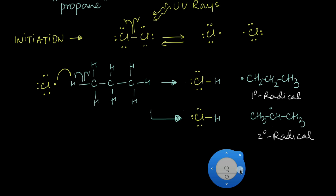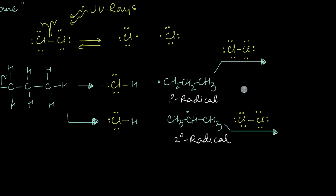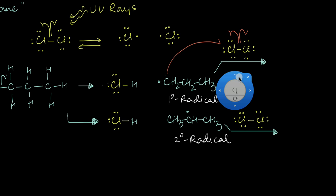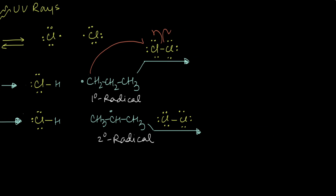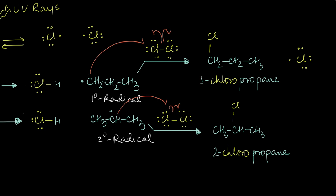These new carbon radicals are also very reactive and can react with any undissociated chlorine molecules remaining in the mixture. The first-degree carbon radical can abstract a chlorine atom from unreacted Cl₂, ultimately leading to the formation of 1-chloropropane along with a new chlorine radical. Similarly, the second-degree radical can abstract a chlorine atom, leading to the formation of 2-chloropropane along with another chlorine radical.